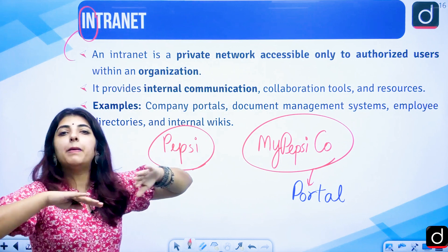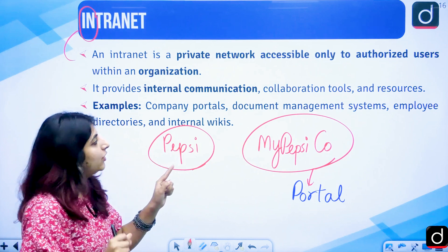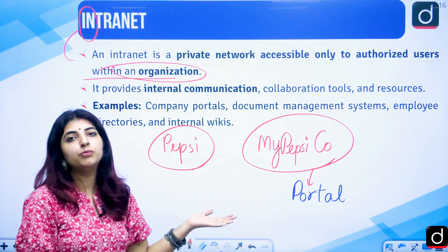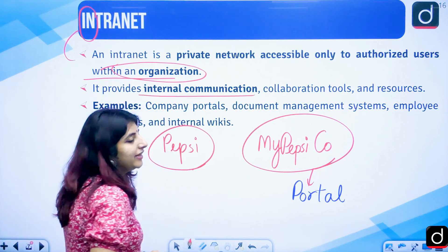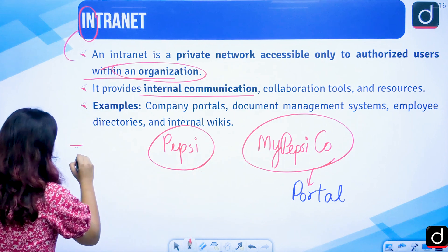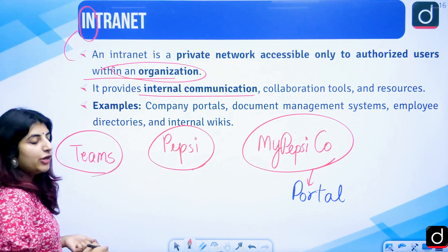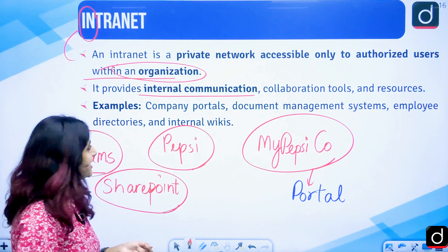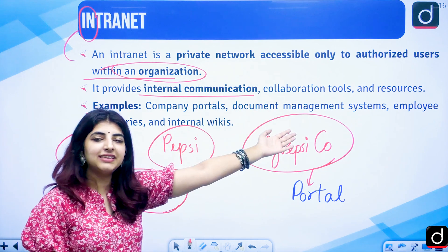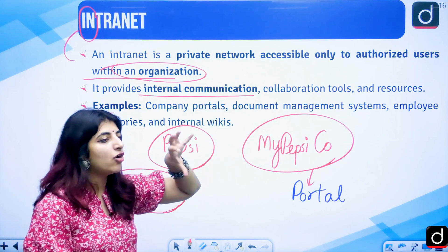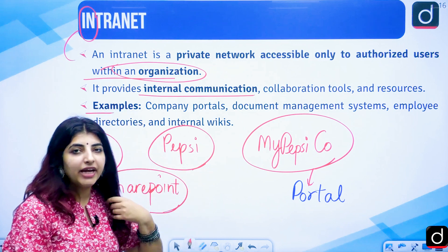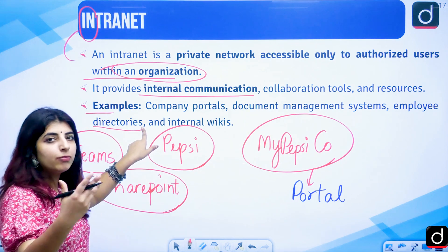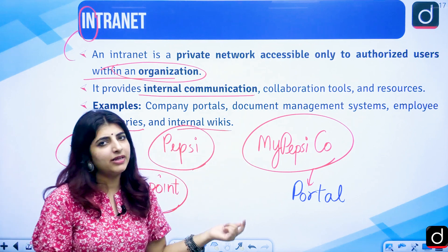Internet is a public network available to all, whereas intranet is a private network accessible only to authorized users within an organization. Internal communication takes place through it. Collaboration tools like Microsoft Teams and SharePoint are certain examples of intranet. Examples include company portals, document management systems — where your entire profile is stored, showing how many leaves you have taken, how many are left, and upcoming holidays — employee directories, and internal wikis.